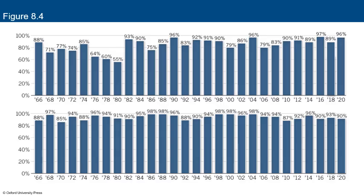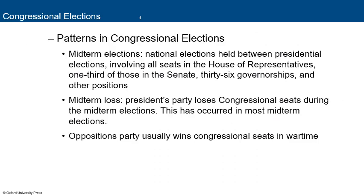Reelection rates show that for the House, especially in the last 20 to 30 years, the rate is 90 to 96%, and for the Senate it's been 90 to 95%. In midterm elections — national elections held between presidential elections involving all House seats, one-third of Senate seats, and 36 governorships — the president's party historically loses congressional seats. We would expect the Democratic Party to lose seats in Congress, which could be a very big issue. The opposition party also usually wins congressional seats in wartime.